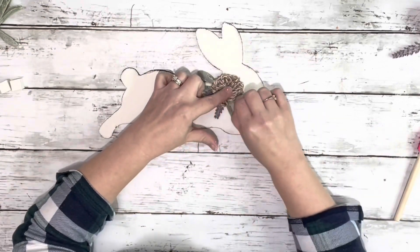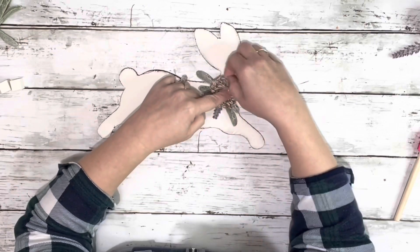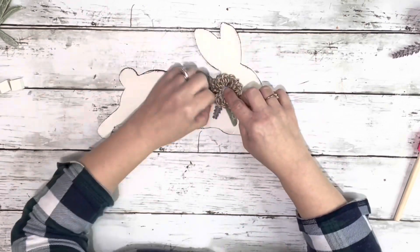Once I had the little flower glued on there, I just kind of moved around the twine and made sure that the flower was nice and open.